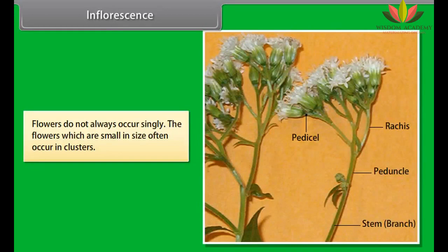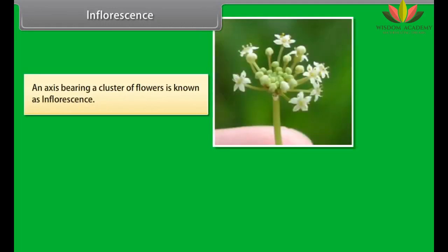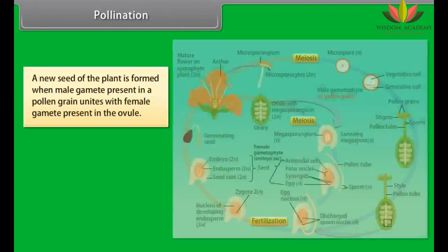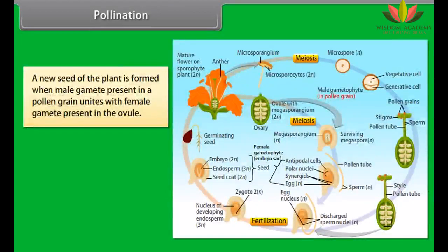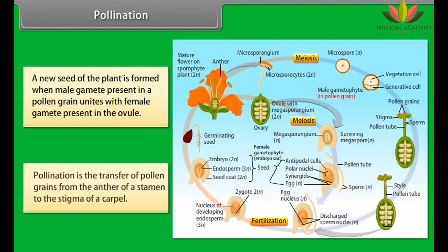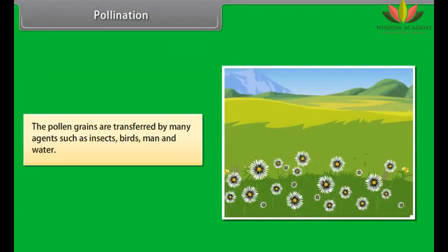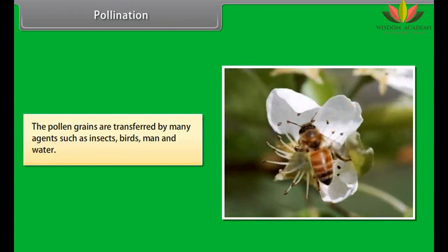Neuter flowers are flowers in which both stamen and pistil are absent. An example is mango and cashew. Monoecious plants bear both types of unisexual flowers on the same plant; examples include maize, cucurbit, and castor. Dioecious plants bear only one type of unisexual flower; examples include date palm and mulberry.